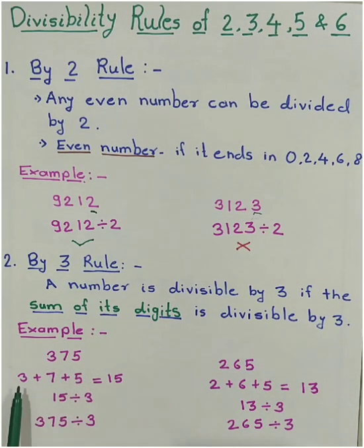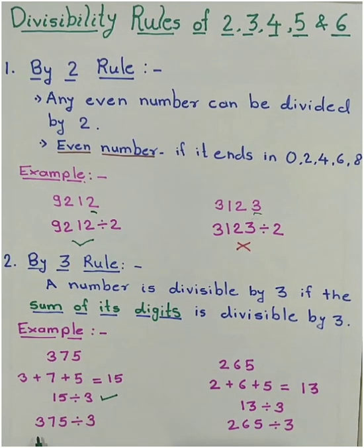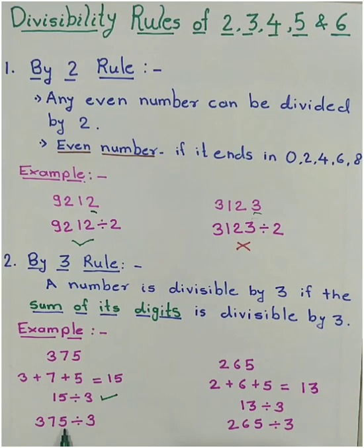375. As per the rule, we will add the digits. 3 plus 7 plus 5 is equal to 15. Can we divide 15 by 3? If you are finding this difficult, simply add the digits 1 plus 5 that is 6. And check, can we divide 6 by 3? Answer is yes. And as this rule is passed, we can say 375 can be divided by 3.